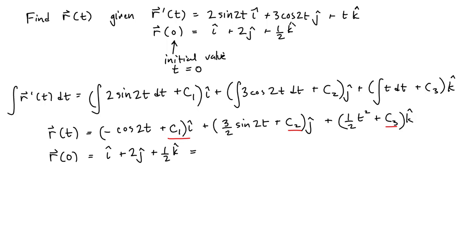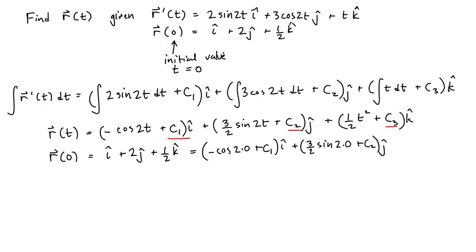What we have to do is take each component in turn and set it equal to its equivalent in our vector function. Our vector function evaluated at t equals 0 gives us: minus cosine of 2 times 0 plus C1 for the i-hat component, plus 3 halves times the sine of 2 times 0 plus C2 for the j-hat component, and 1 half times 0 squared plus C3 for the k-hat component.